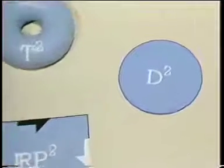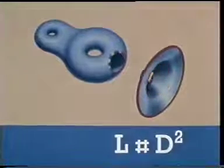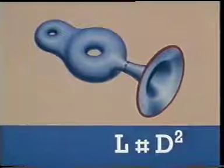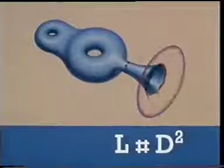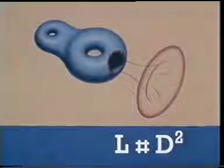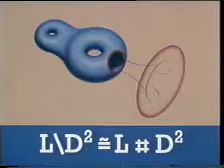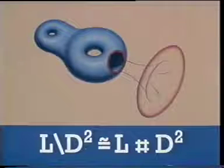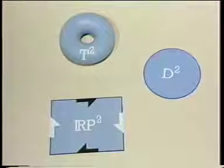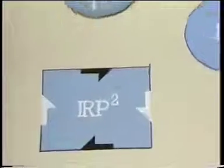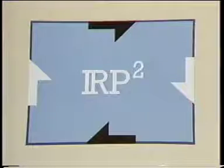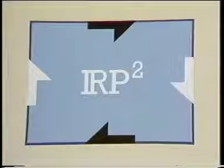Let's now consider the disk and see the effect of forming its connected sum with an arbitrary surface. The effect is quite surprising, because when you take the connected sum, you might expect that you'd be adding something to the surface L, whereas topologically you've actually removed something. The surface L has ended up with a disc actually cut out. To put it another way, taking the connected sum with a disc has the effect of constructing a boundary curve.